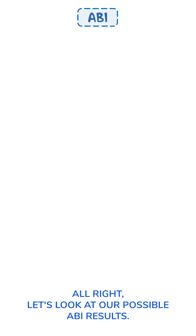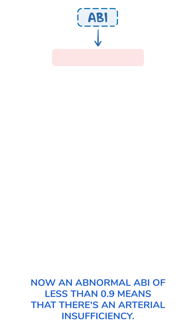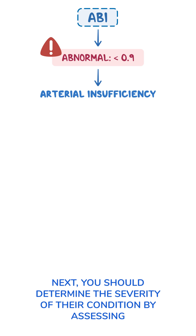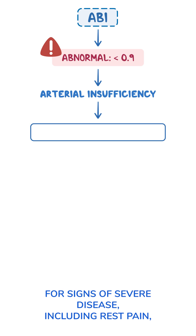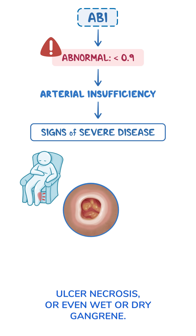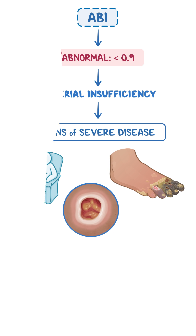Alright, let's look at our possible ABI results. Now, an abnormal ABI of less than 0.9 means that there's an arterial insufficiency. Next, you should determine the severity of their condition by assessing for signs of severe disease, including rest pain, ulcer, necrosis, or even wet or dry gangrene.